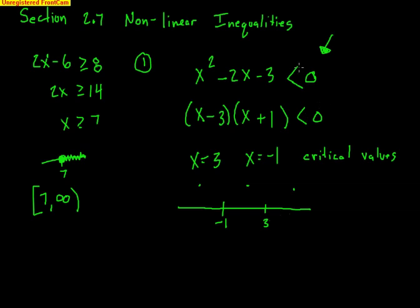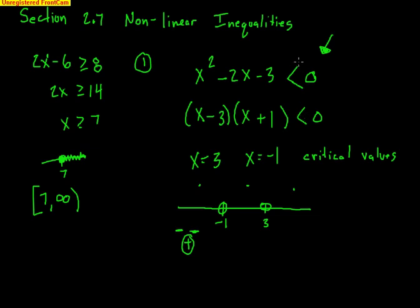I need numbers that are less than 0, not equal to 0. So 3 and negative 1 are not solutions — open dots — because they make 0, and I must be strictly less than 0. Less than 0 means negative numbers. Testing any number below negative 1, like negative 100: negative 100 minus 3 is negative, and negative 100 plus 1 is also negative. Two negatives multiplied make a positive, so numbers in that range create positives. I don't want positives — I want negatives — so answers do not exist there.